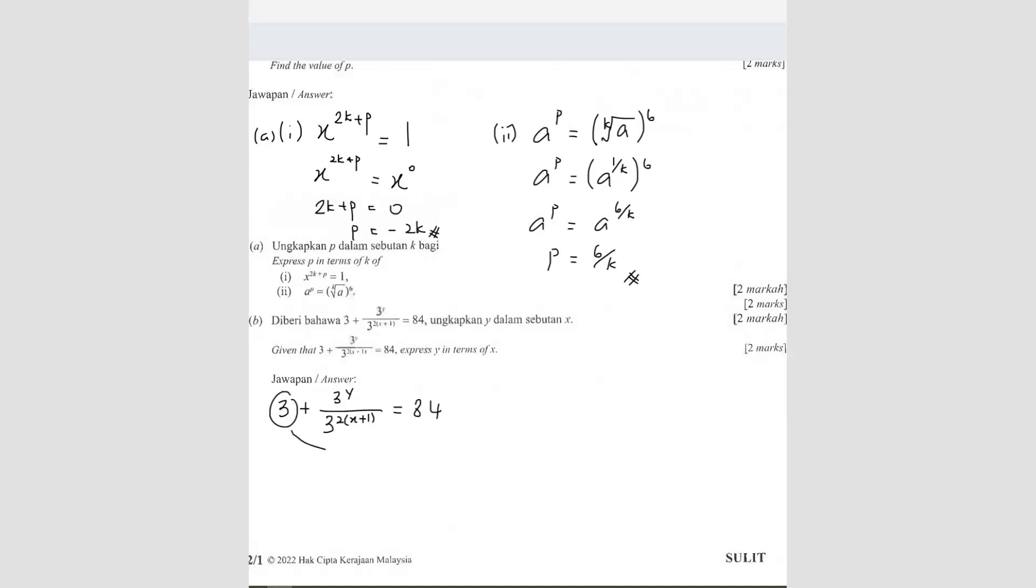So same thing, you want to make them become the same base. So what we can do is, this 3 here, we can shift over to the other side because I can't really combine with this, right? I cannot combine. So I just bring it to the other side. But this one, you can actually write in a simpler form because this one is divide, right? So divide means the indices here you can combine. Divide means minus to 3 power y minus 2x plus 1